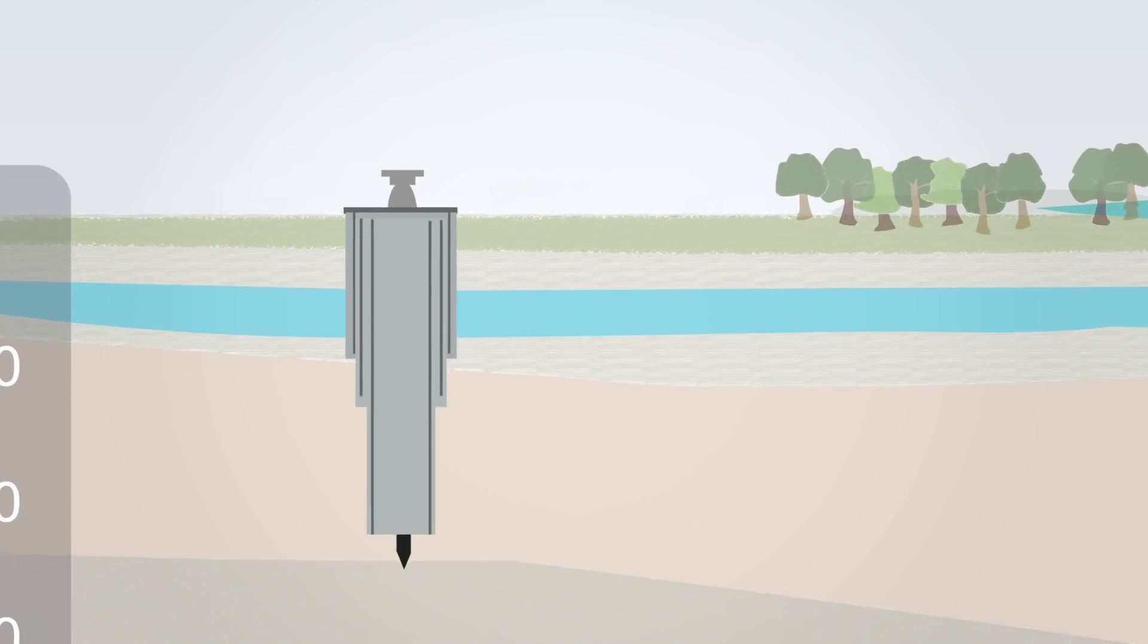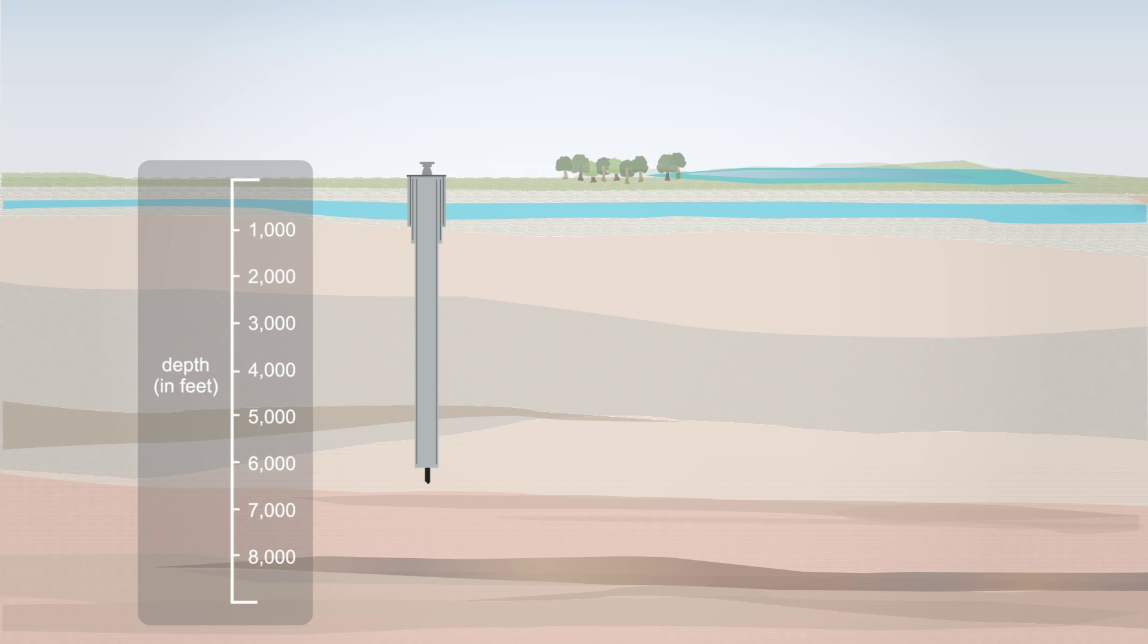An intermediate casing is also installed, designed to prevent fluid migration and to keep the hole from collapsing. At the end of the intermediate casing, the hole is drilled laterally to run within the shale bed.